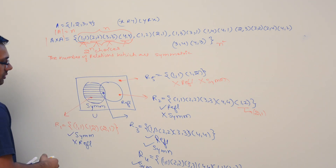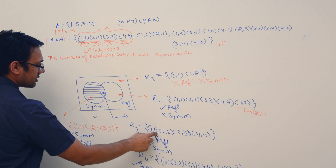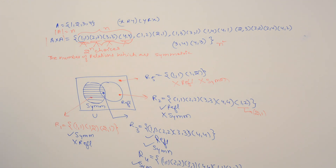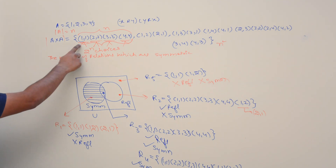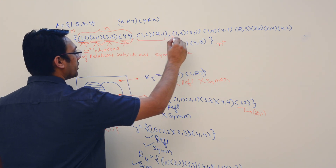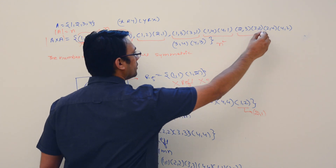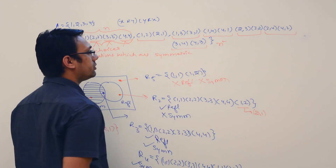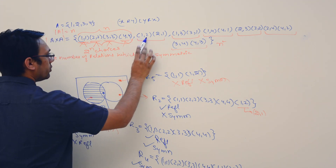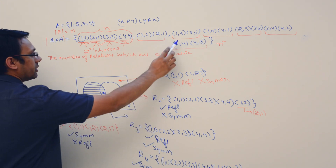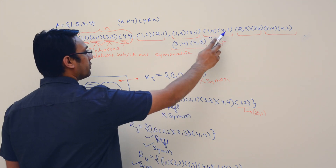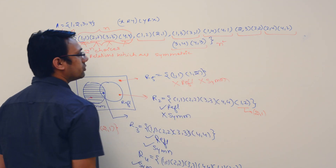You can clearly see that if 1 is related to 1, then y R x is the same as x R y, so this kind of relation will be symmetric. For the other elements, we have a choice in a pair. If 1,2 is there then 2,1 must also be there. If 1,3 is there then 3,1 must also be there. If 1,4 is there then 4,1 must also be there. If 2,3 is there then 3,2 must also be there.